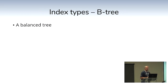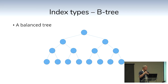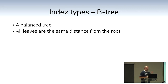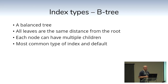The B-tree — a balanced tree. You have a starting node, and from there you go left or right. Within the database the tree will not be more than one level different across the entire structure — Postgres keeps the tree balanced. That means it's equally fast to search for anything anywhere in it. All leaves are the same distance from the root, and there can be multiple children per node, which helps keep it balanced. B-tree is the most common type and the default.